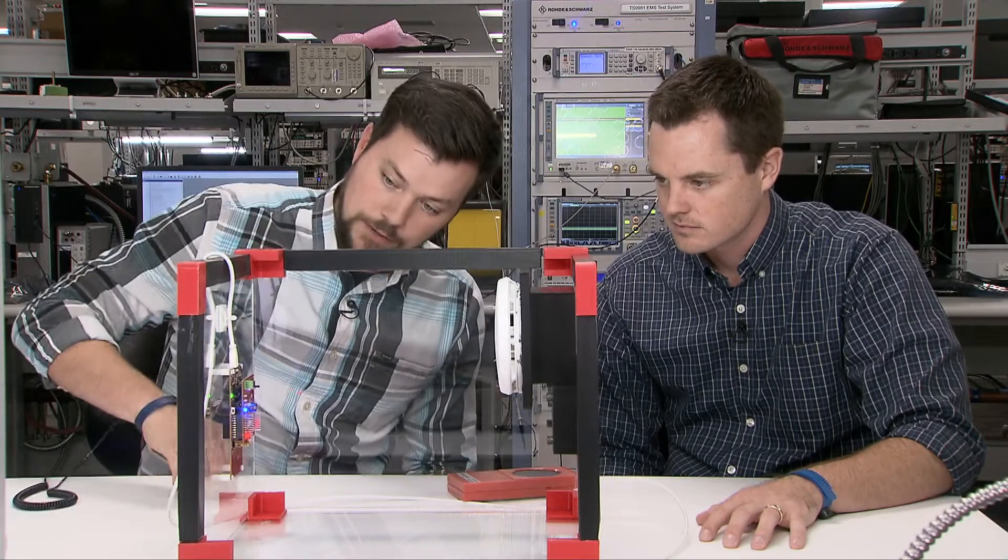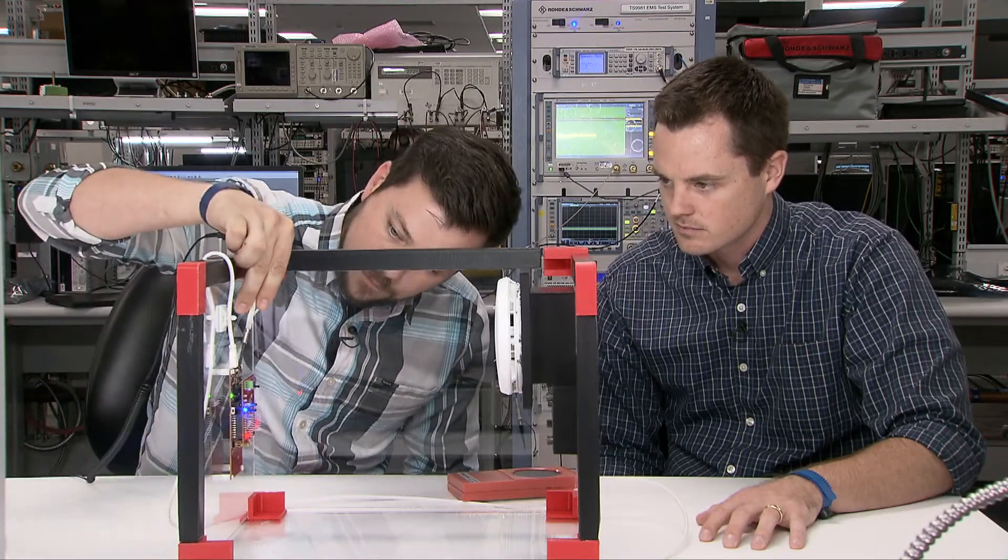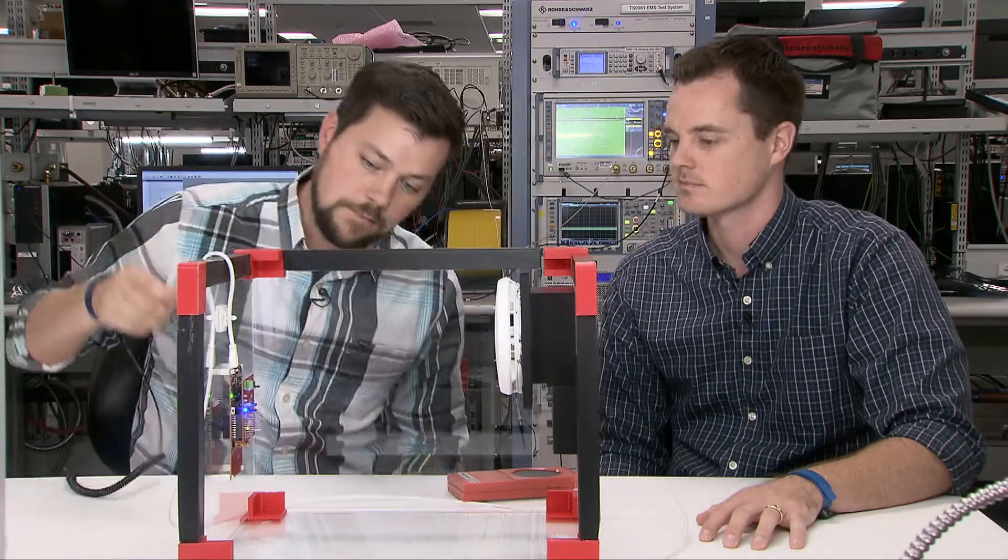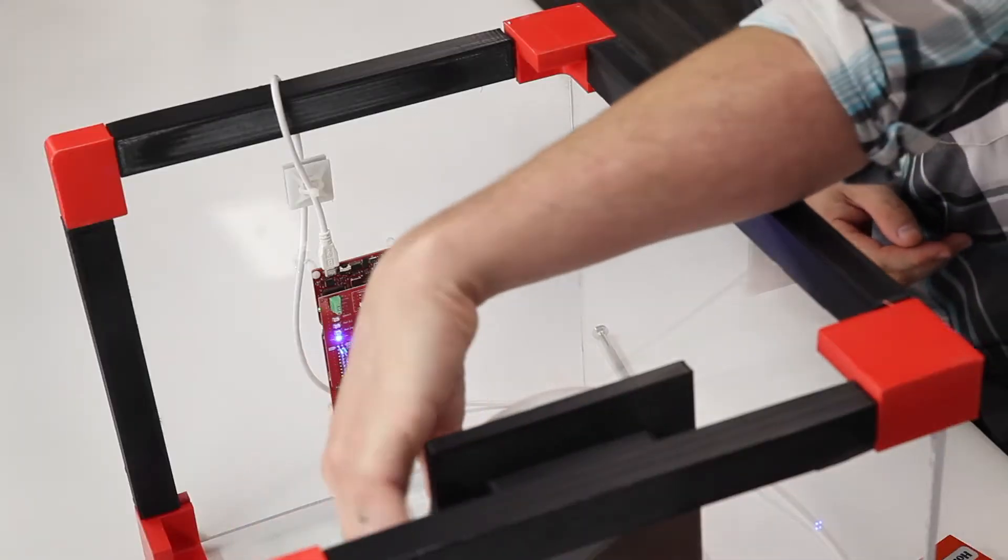So essentially we're just doing the same thing except we're in a completely different detection algorithm with the zero crossings and stuff like that. And then after that we can go ahead and reset it. All right and then we're ready to go so we go ahead and push this.